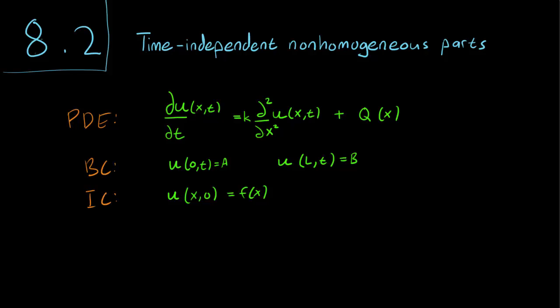This looks similar to the various heat equations that we've seen so far in this class. There are a few important differences. Firstly, we are considering a heat source, so you have this Q(x) term. This refers to the fact that we have a one-dimensional rod that is generating heat. Notice that the heat source Q(x) depends on x but not on t, so we are not considering a heat source that changes with time.